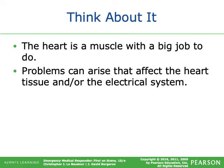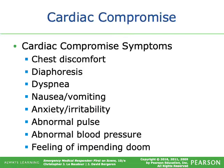The heart is a big muscle with a big job. Problems can arise affecting heart tissue or the electrical system. Symptoms of cardiac compromise include chest discomfort, diaphoresis (sweating), dyspnea (shortness of breath), nausea, vomiting, anxiety or irritability, abnormal pulse, abnormal blood pressure, and a generalized feeling of impending doom. If anyone tells you they feel like they're going to die, take it seriously.